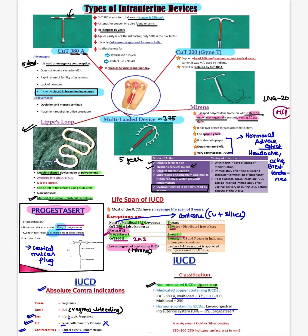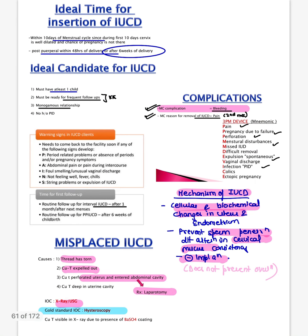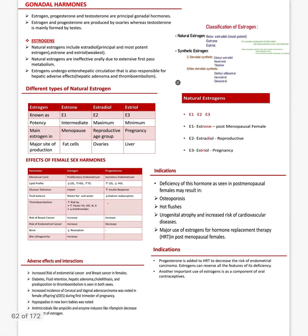Summary for IUCDs: Copper T380A — 380 is the surface area of copper, lifespan 10 years, also known as Paragard. Progesterase — 3rd generation hormone IUCD, lifespan 1 year, contains 38 mg progesterone, releases 65 micrograms daily. Mirena — LNG-20, releases 20 micrograms daily, contains 52 mg levonorgestrel, lifespan 5 years. Contraindicated in history of PID, ectopic pregnancy, and carcinoma of cervix and endometrium.